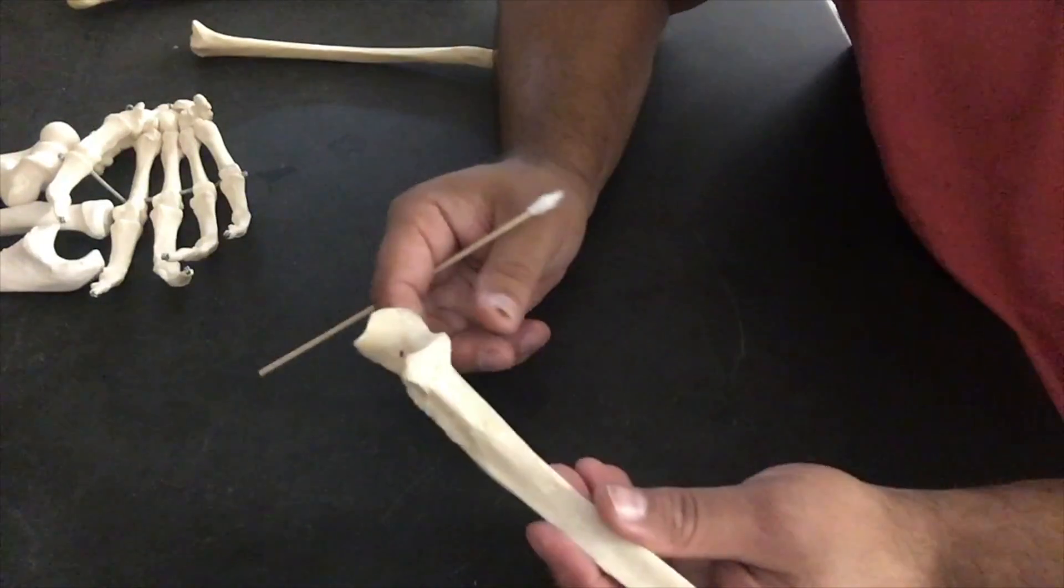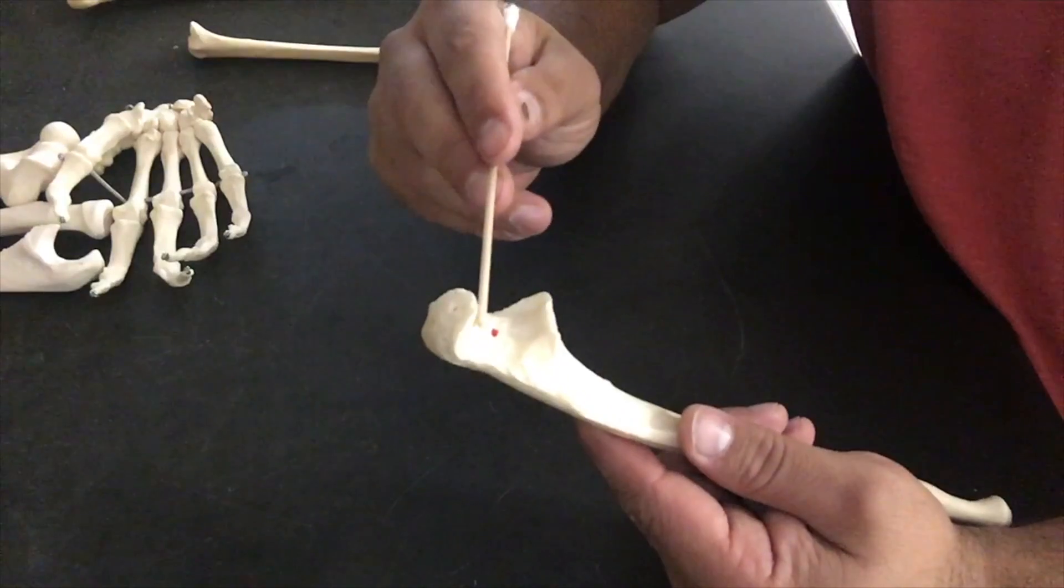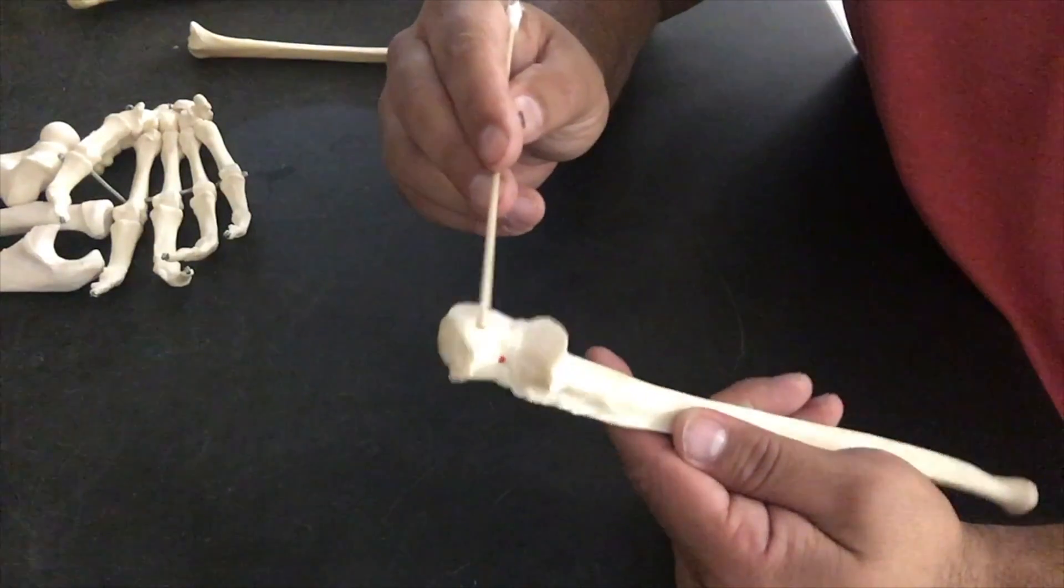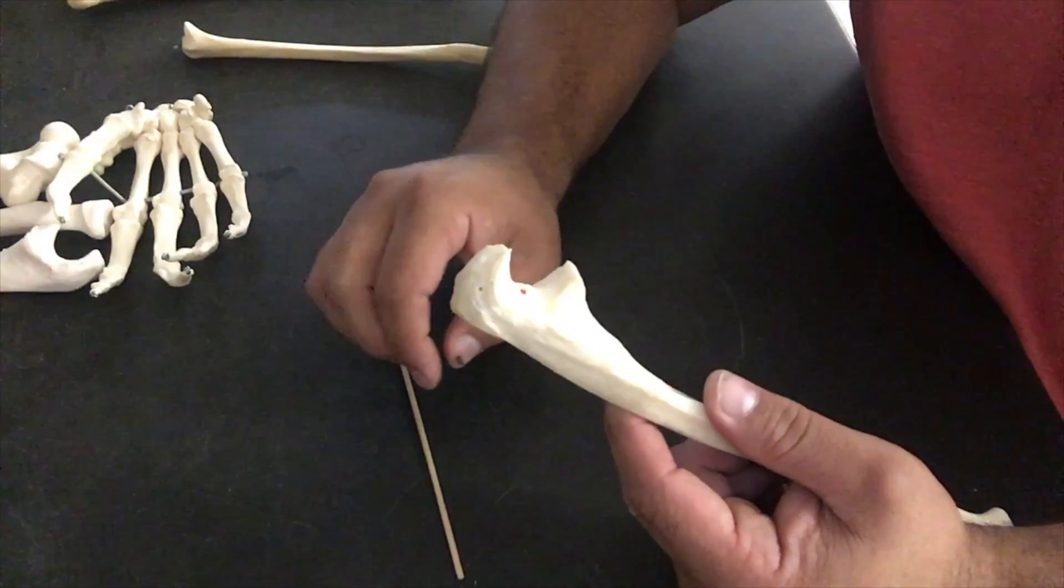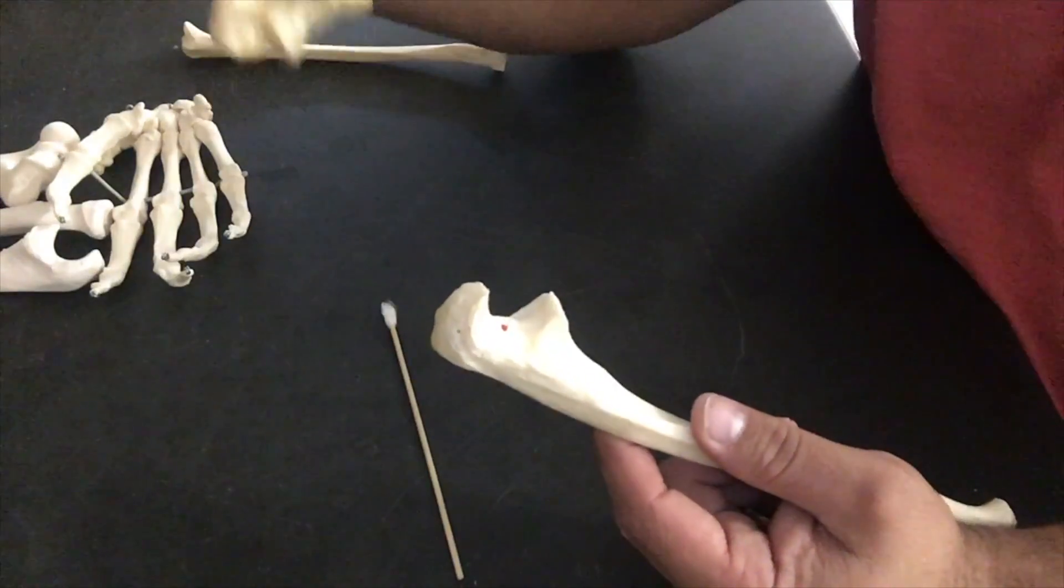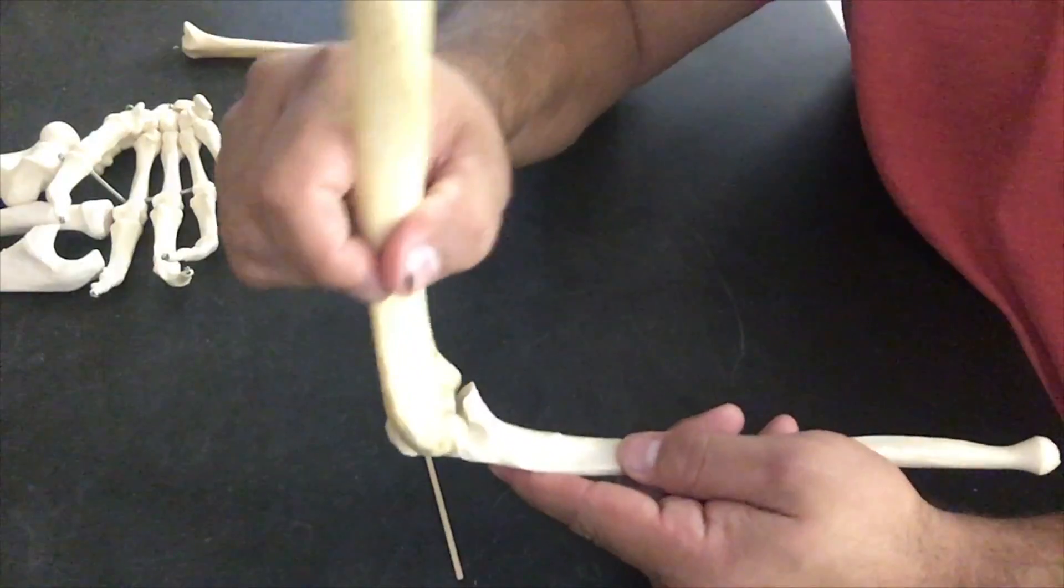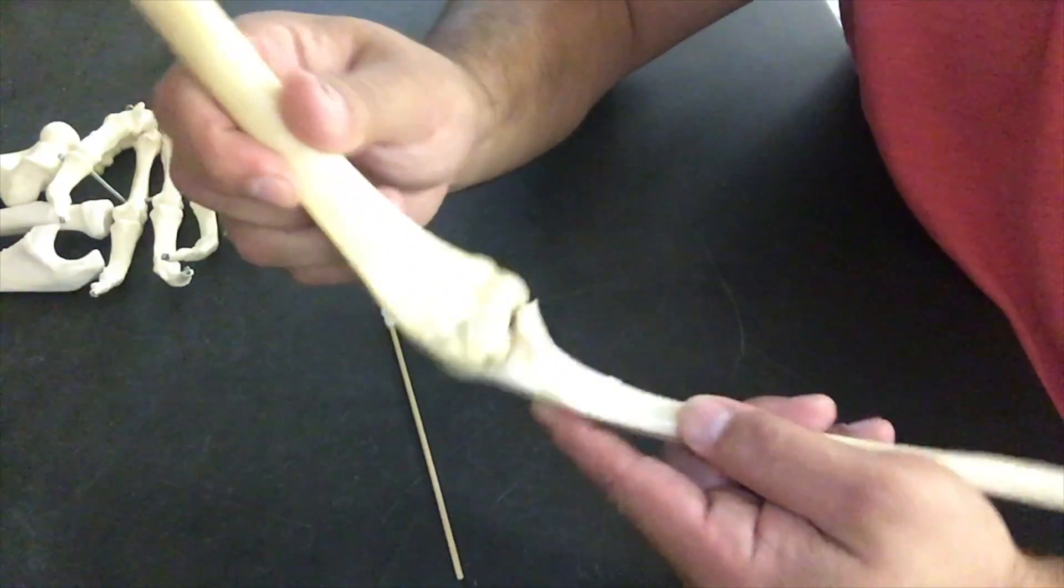Let's look at some of these landmarks. The first and most prominent landmark here is going to be this notch. This notch is called a trochlear notch. You say, 'Oh, I've heard that word before,' and you have. That trochlea on the humerus, that trochlea, is going to grab into that trochlear notch.